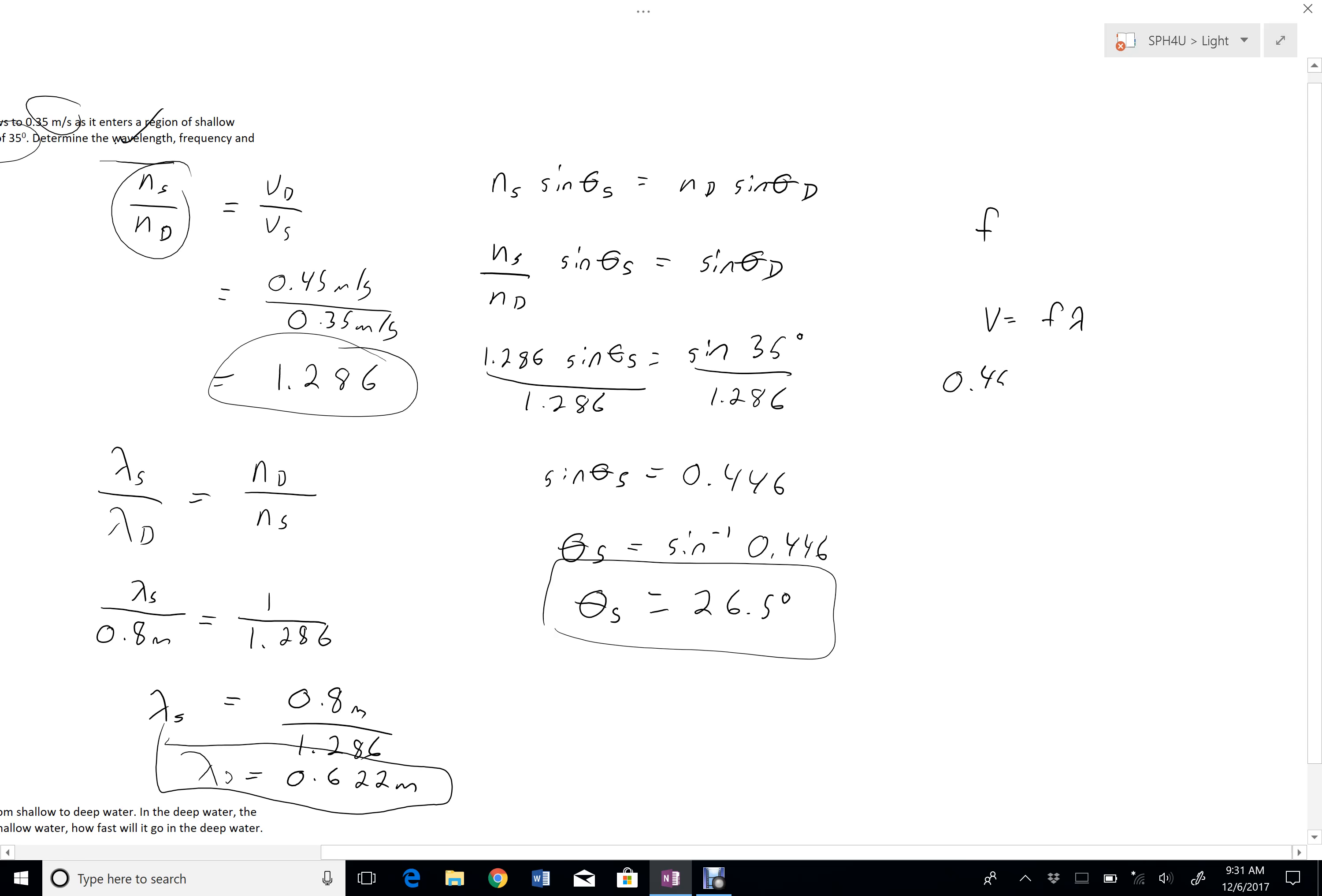With that in mind then, I'll use the deep water because those are the given pieces of information I had in the first place. And that way if I made a mistake at any point during this question, I won't carry that mistake forward. So divide both sides by 0.8.